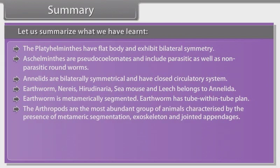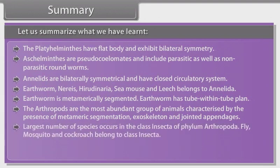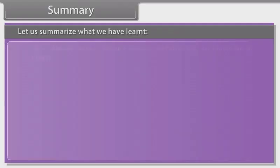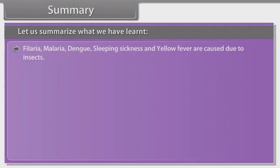Arthropods are the most abundant group of animals, characterized by metameric segmentation, exoskeleton and jointed appendages. The largest number of species occurs in the class Insecta of phylum Arthropoda. Fly, mosquito and cockroach belong to class Insecta. In the Insecta group, the body is divisible into head, thorax and abdomen, with three pairs of legs and two pairs of wings. Filaria, malaria, dengue, sleeping sickness and yellow fever are caused by insects.